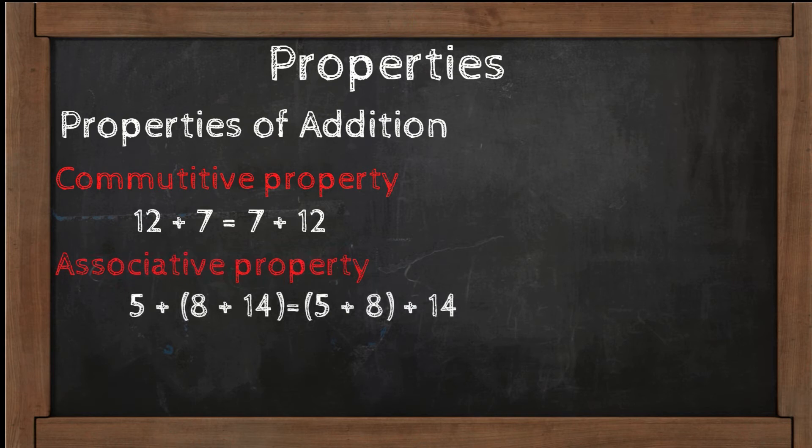Associative property: if the grouping of addends changes, the sum stays the same. Add the sum of 8 and 14 to 5, or add the sum of 5 and 8 to 14.